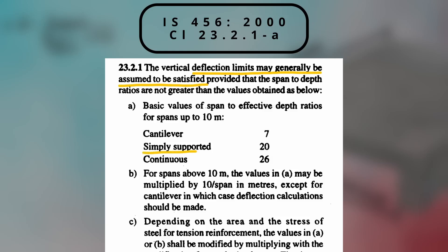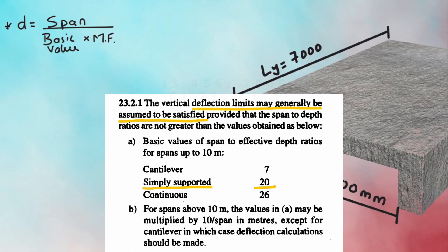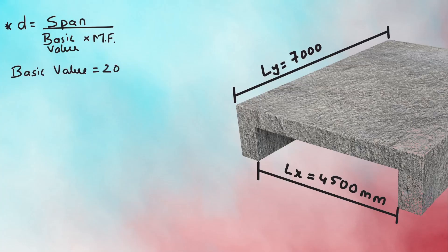Assuming a slab is simply supported, we can take the basic value as 20. MF is the modification factor, which is a multiplier for basic value and is inversely proportional to the required depth of the slab. Higher modification factor means less depth required and vice versa. Presently, we can take the value of 1.25.